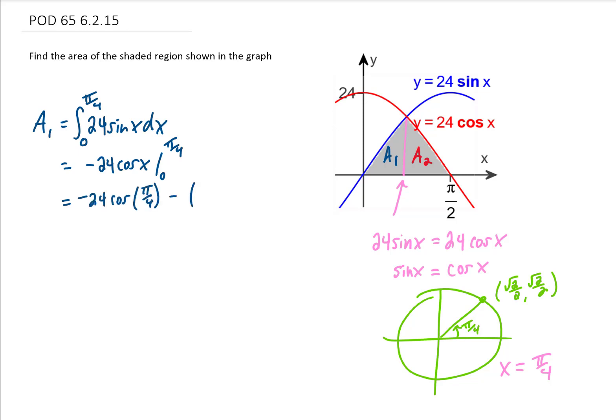We're going to subtract and we're going to plug in our lower limit of integration. Now cosine of pi over 4 is the square root of 2 over 2 and cosine of 0 is 1. So cancelling 24 over 2 and simplifying just a bit gives us this as our value for A1.